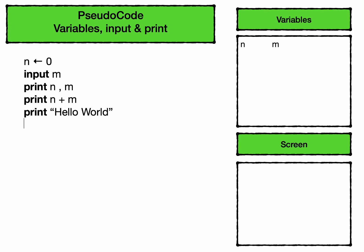Pseudocode is a way of planning out computer code or algorithms. To start off with, we're going to look at the concepts of variables, input and print. When you look at pseudocode, you should read down the page as you would normally do when reading a book.